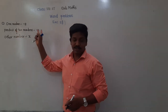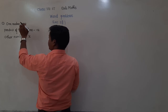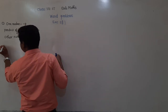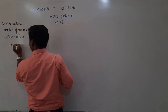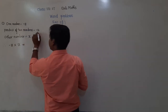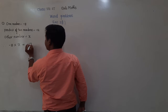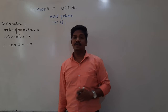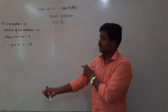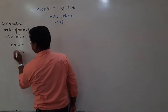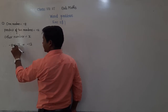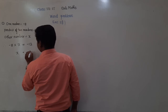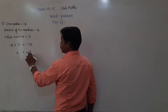According to the given condition, it is a product — product means multiplication. So multiplication of the first number and second number: that is minus 8 into x. So minus 8 into x is equal to minus 12. This will be your equation. Now we have to find the value of x. To find x, this minus 8 which is multiplied here, we will bring to the right side.